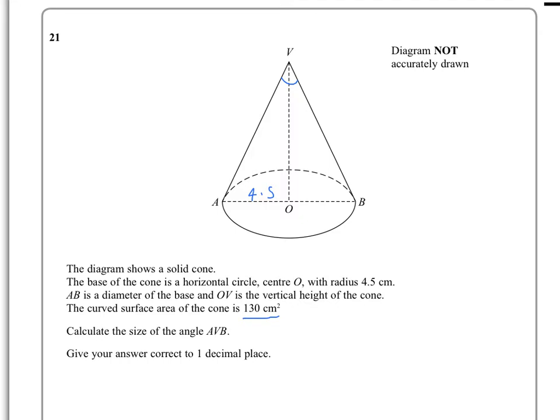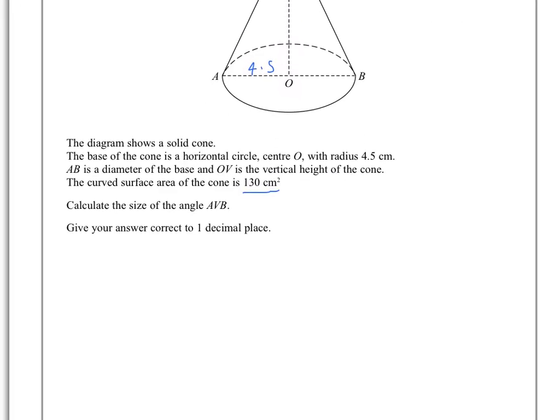We don't, but what we do have is the information that the curved surface area is 130, because the curved surface area of a cone is πRL, and we know that is equal to 130. So π we obviously know, R is 4.5, and L is this length.